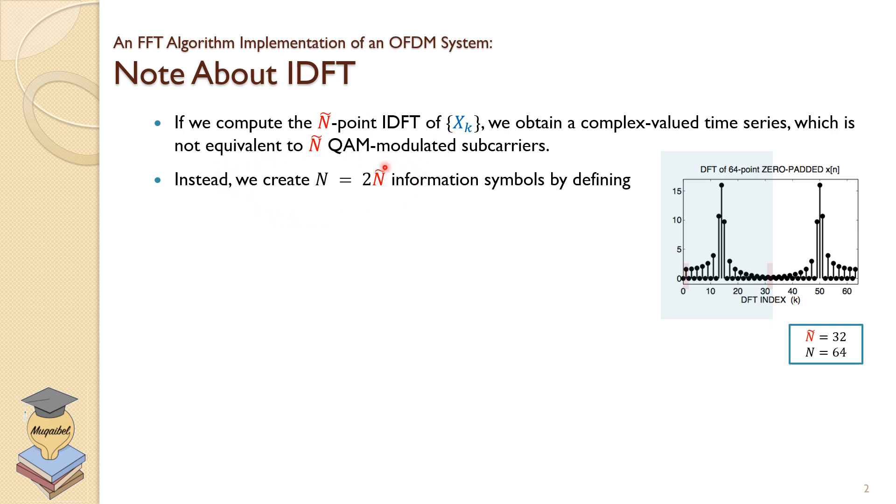Instead of dealing with N-tilde, we're going to create a vector that's capital N, which is twice the length of N-tilde. We will make it a condition to ensure it has symmetry—what we call conjugate symmetry, which means even magnitude and odd phase.